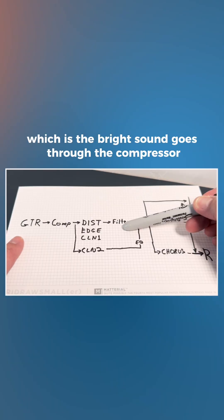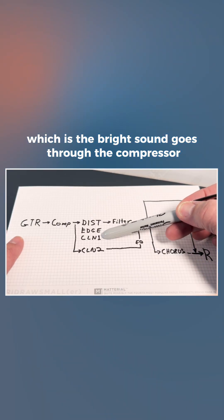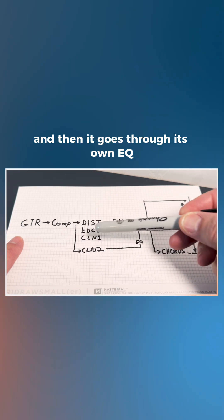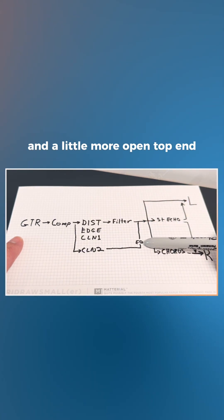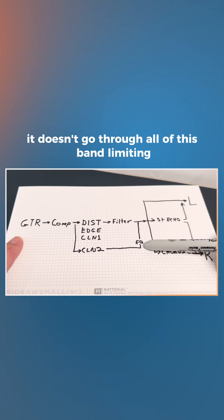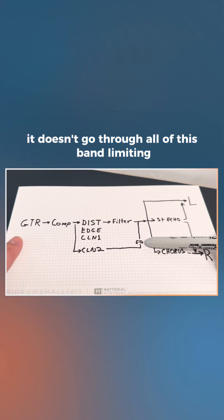Clean, too, which is the bright sound, goes through the compressor, and then it goes through its own EQ that gives it that bright. It's got a little more bottom end and a little more open top end. It doesn't go through all of this band limiting.